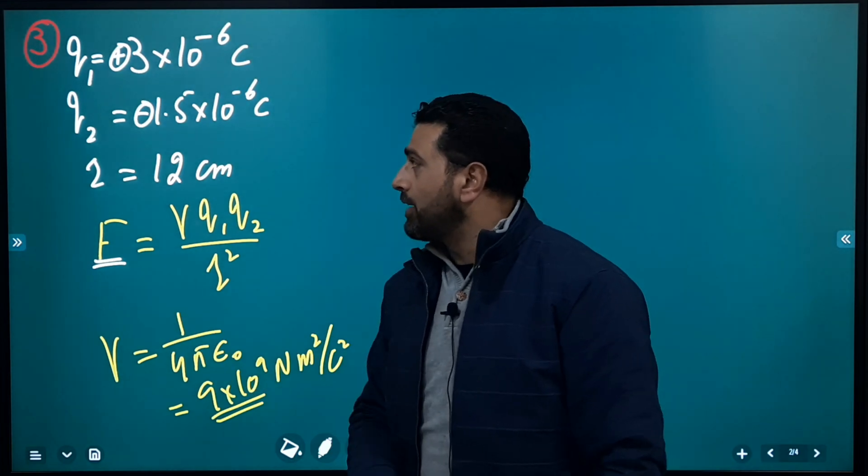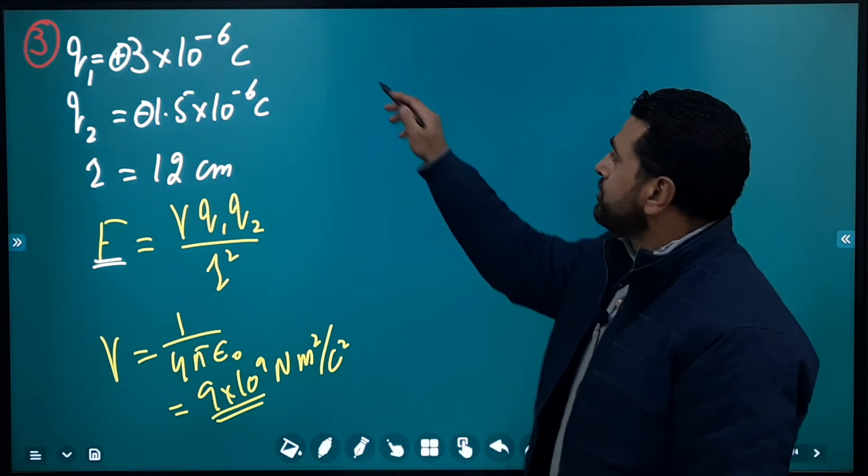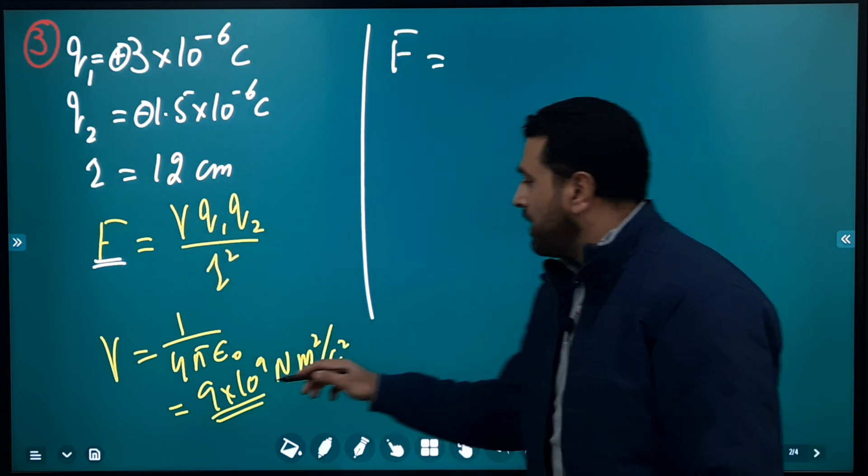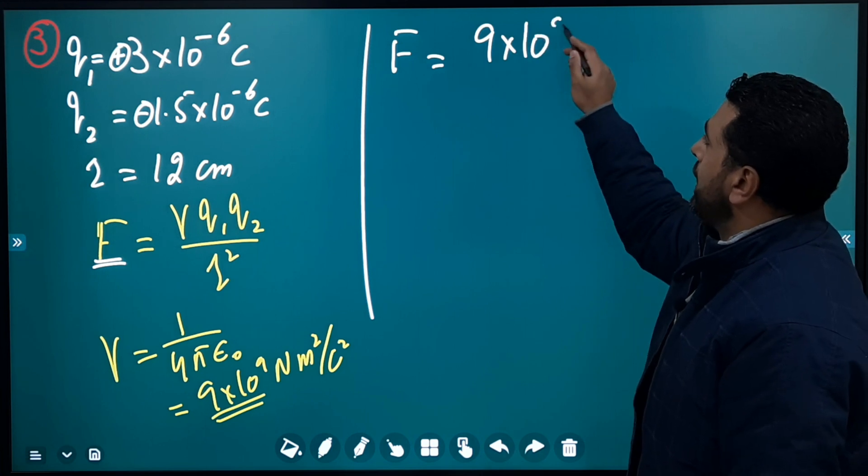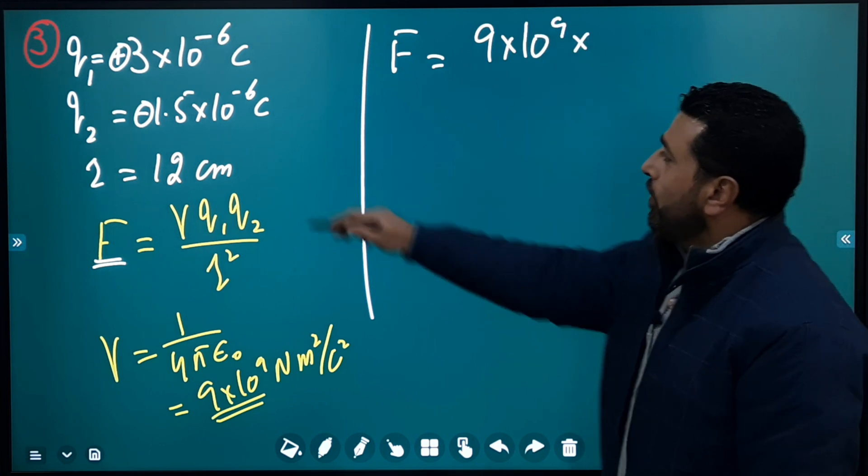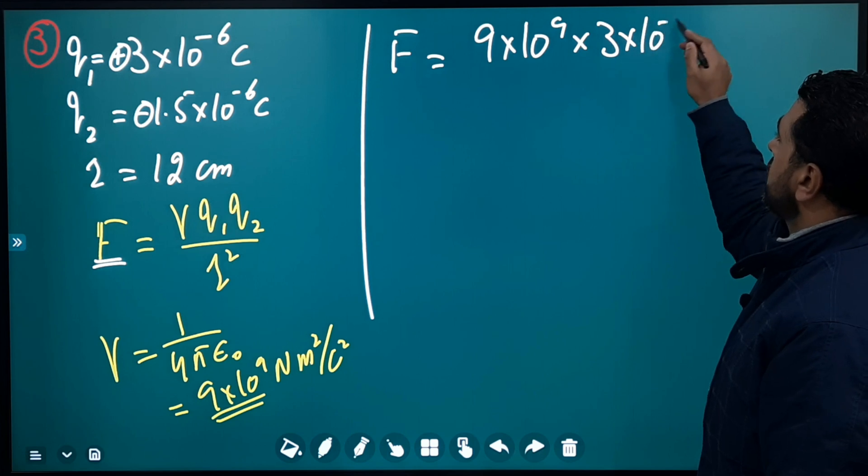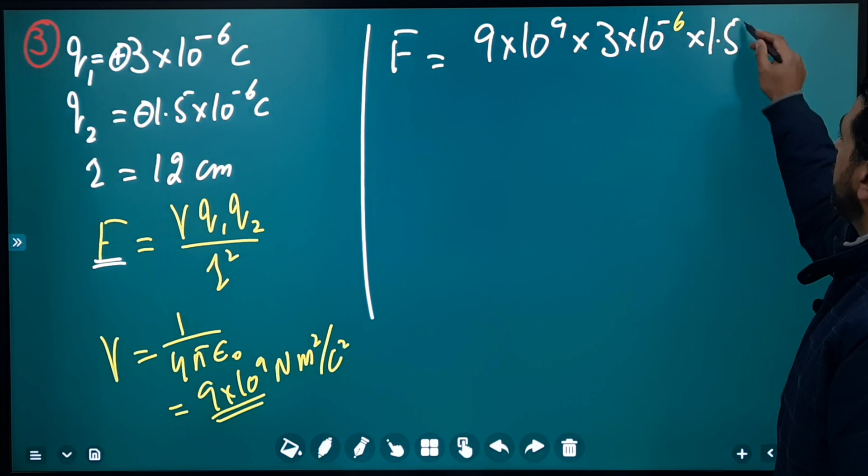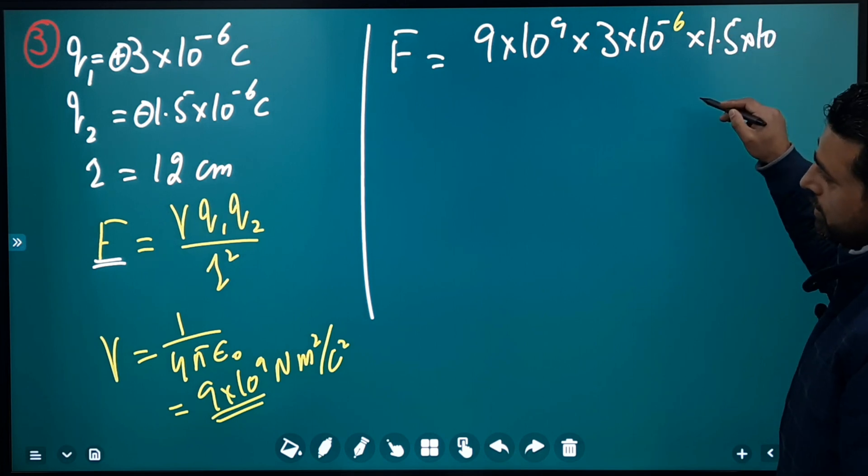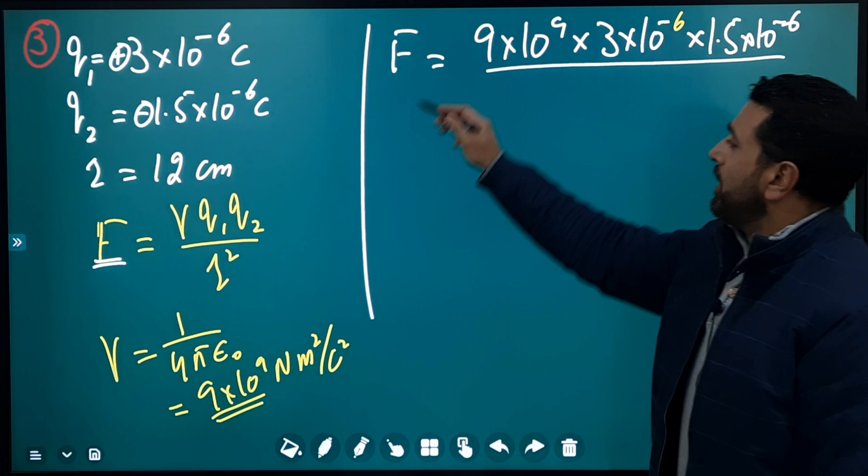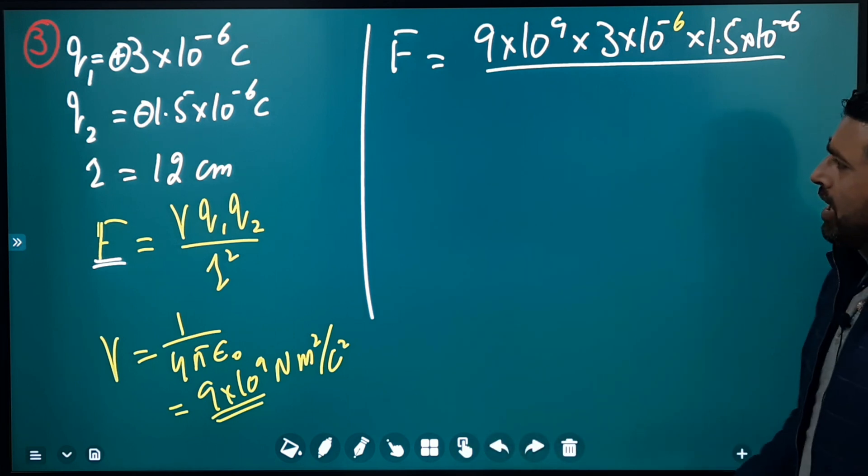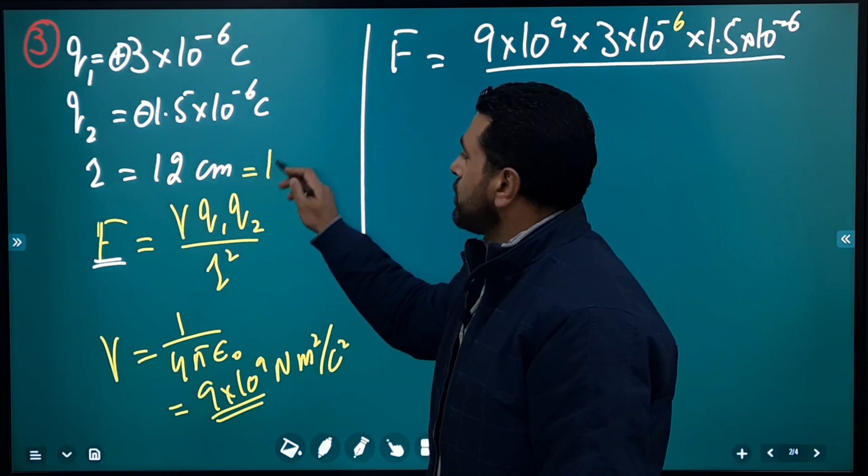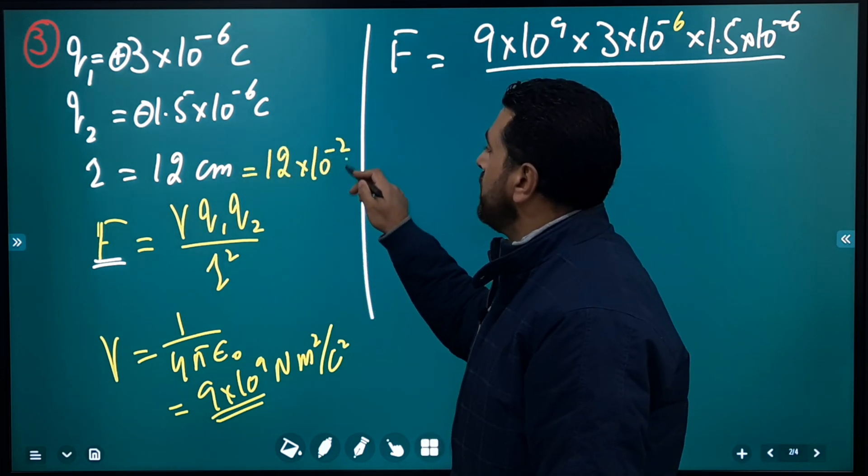So F is equal to - let's substitute the values. γ is 9×10⁹ times Q₁ is 3×10⁻⁶ times Q₂ is 1.5×10⁻⁶, then divided by distance squared. Now distance is not in SI system, distance is in centimeters, so we'll first convert it. This is 12×10⁻² meters.